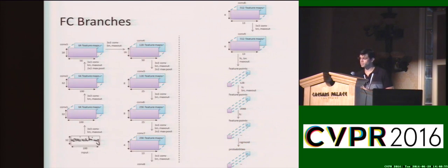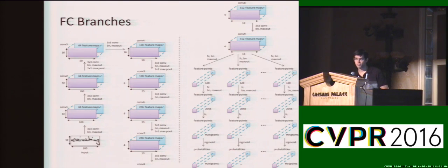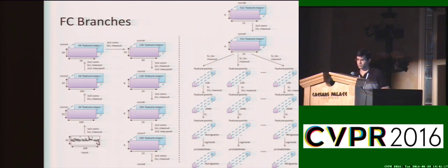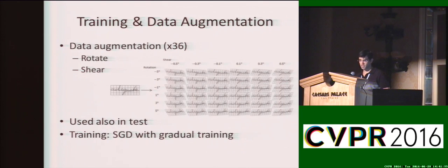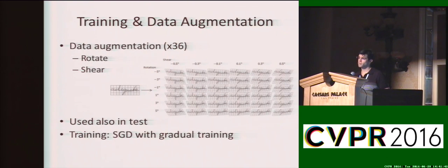A typical convolutional neural network usually looks like a sequence of layers with the last fully connected layer generating all of the outputs. In our network, we first divide our attributes into several groups and then allocate a fully connected branch to predict each such group. The motivation is that this allows the fully connected branches to specialize in different regions of the word — for example, we have a fully connected branch which only predicts attributes from the first half of the word. We use simple data augmentation by rotating and shearing every training image, and we also use it in testing: given a test image, we generate its variants, pass all of them through the network, and average the prediction vector.